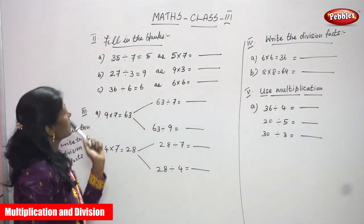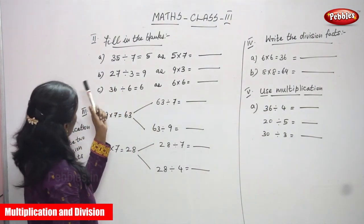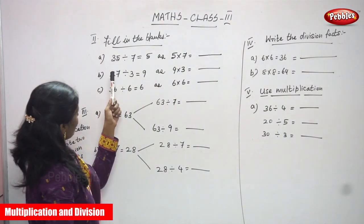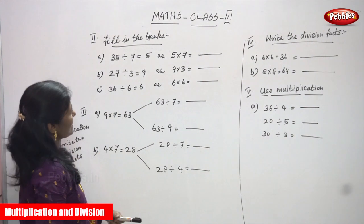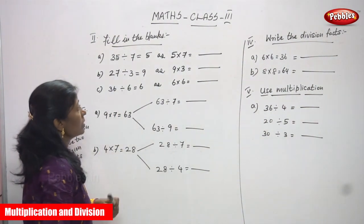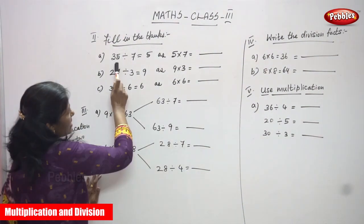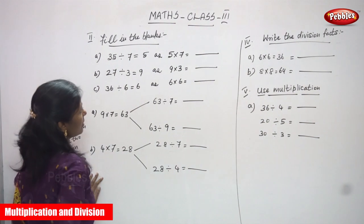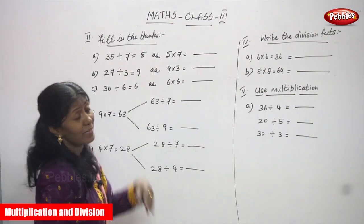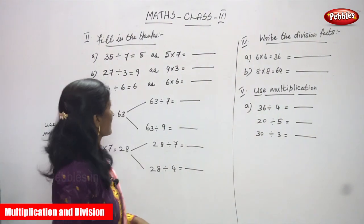Fill in the blank, Roman number two. The first question: 35 divided by 7, you can get 5. So that is the division answer given. Then you have to find out the multiplication answer.